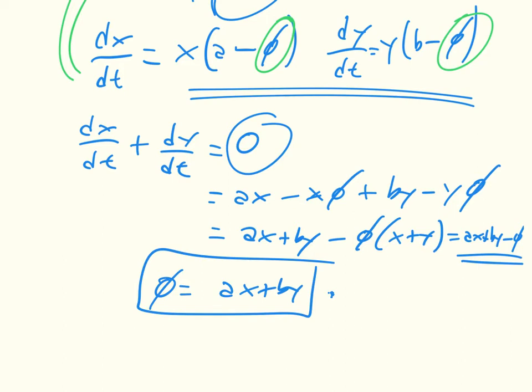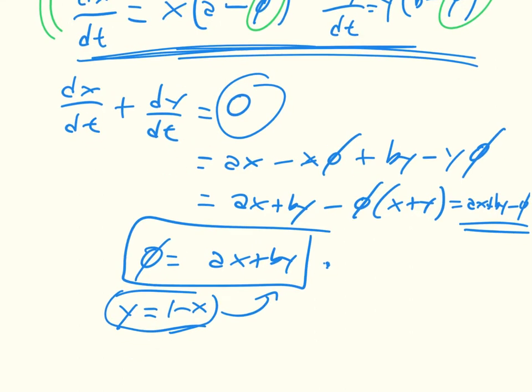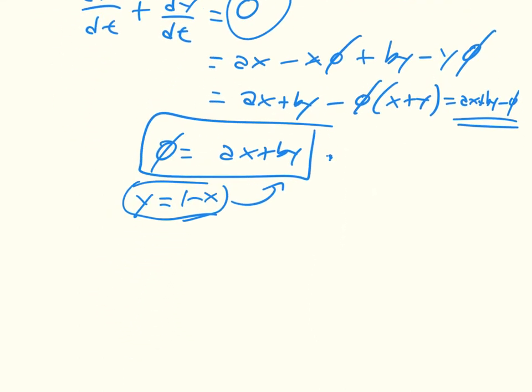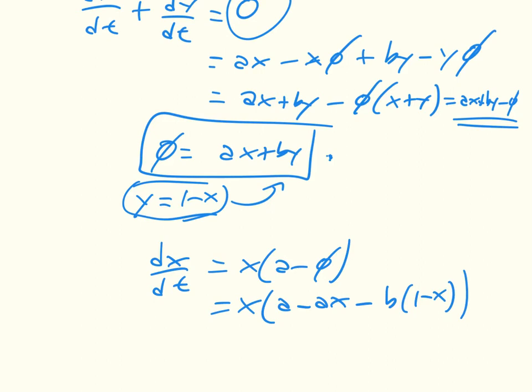If we go back to the fact that x plus y is equal to 1, we can substitute into all of these things up here. We can substitute in what happens when y is equal to 1 minus x, and throw that into there. And then once we have that, we have that dx/dt is equal to x times a minus phi.